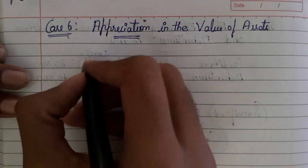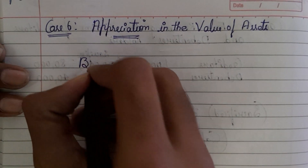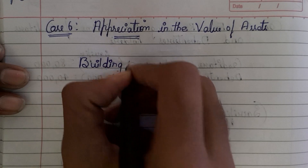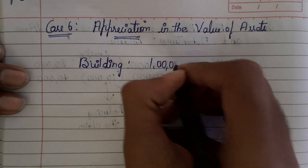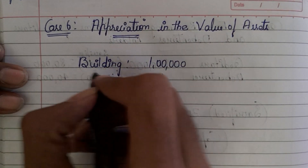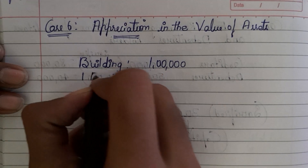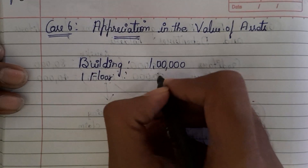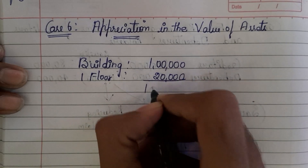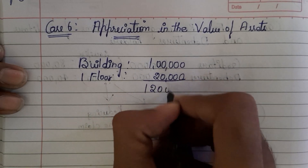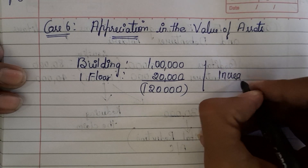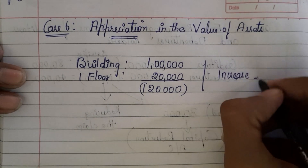What is appreciation? For example, you think that the value of a building is 1 lakh rupees. So then you constructed one more floor which costed you 20,000. So now the value of building is 1 lakh 20,000. So this is nothing but the increase in the value of building.